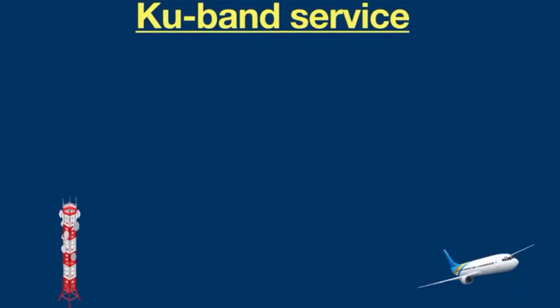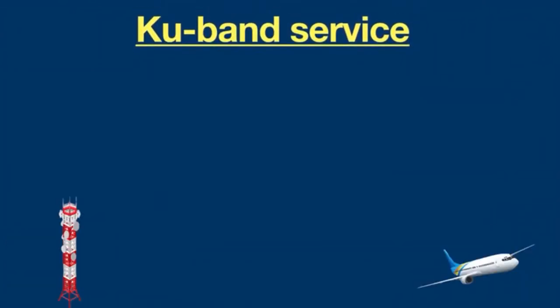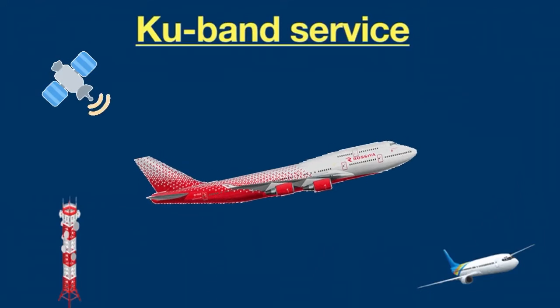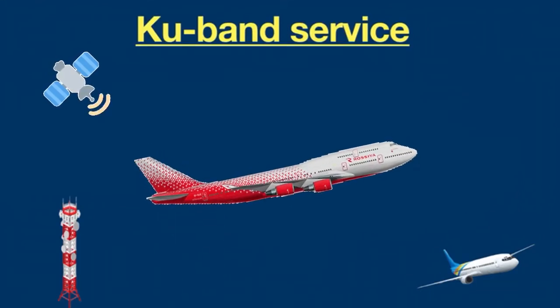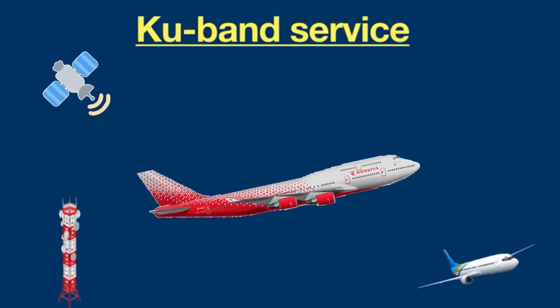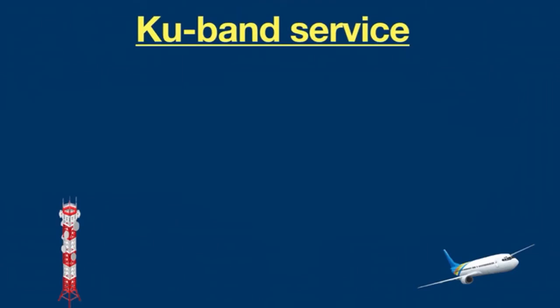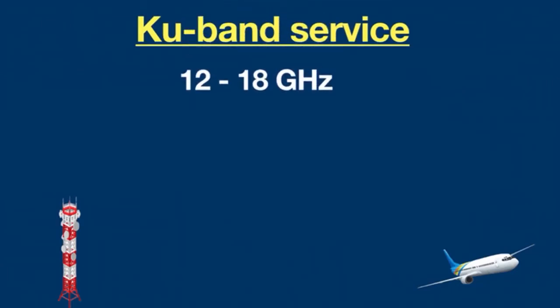The second method is Ku-band service. The flaws of ATG can be defeated with the help of dedicated satellites. These satellites communicate with an aeroplane via a portion of microwave frequency called Ku-band, which utilizes 12 to 18 gigahertz frequency. The higher the frequency, the higher the available bandwidth.